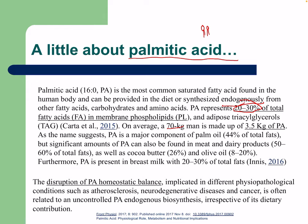Palmitic acid is the major component of palm oil at 44% of total fats, and significant amounts are found in meat, dairy, cocoa butter, olive oil, and breast milk — about 20 to 30 percent of total fats. Disruption of palmitic acid homeostatic balance is implicated in atherosclerosis, neurodegenerative diseases, and cancer, often related to uncontrolled endogenous biosynthesis regardless of dietary contribution.